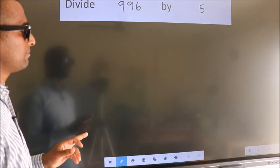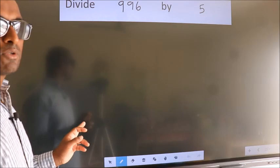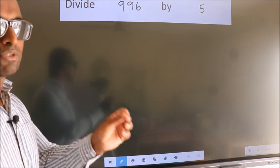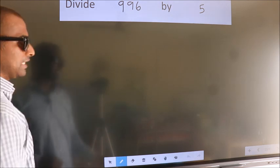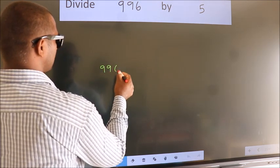Divide 996 by 5. To do this division, we should frame it in this way: 996 here.